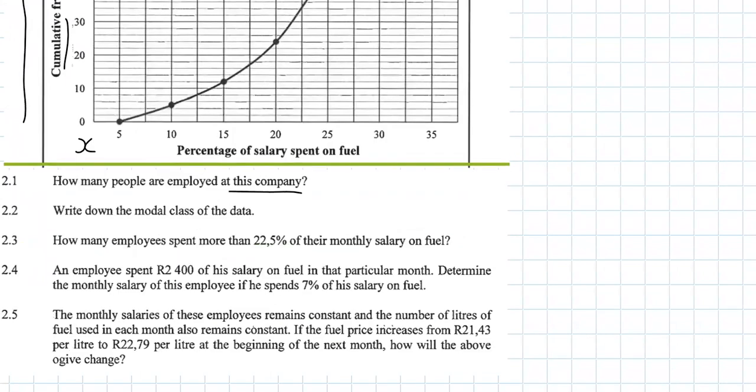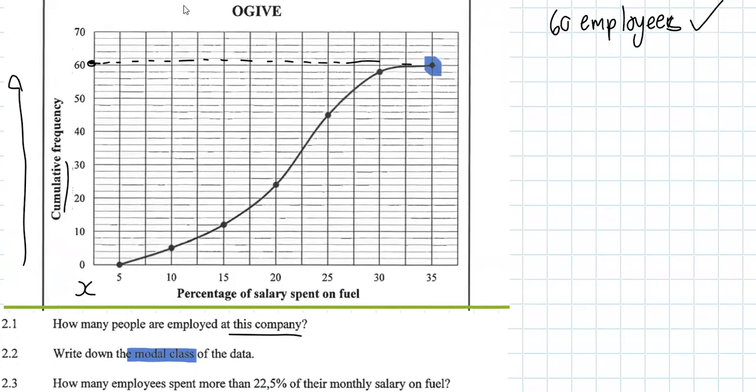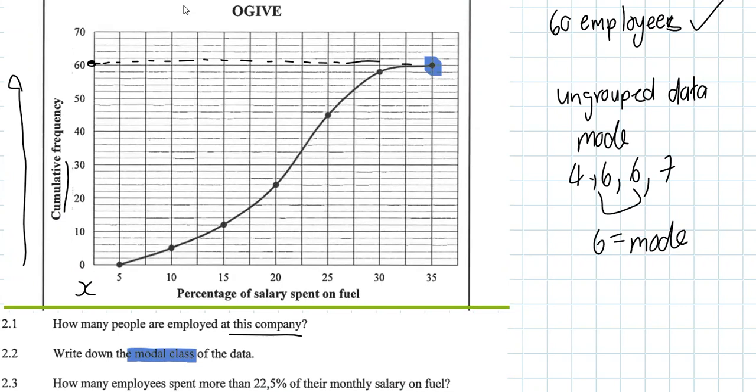Number 2.2: Write down the modal class. Modal class is the x-class that has the most occurrences. Usually with ungrouped data, for example 4, 6, 6, 7, the mode that occurs the most is 6. But the modal class is the class - these are our classes. For example, between 5 and 10 is a class, 10 to 15 is a class, 15 to 20 is a class.